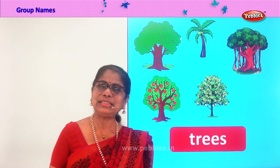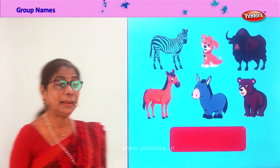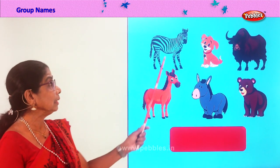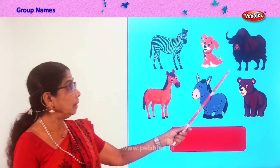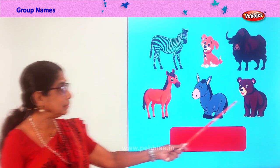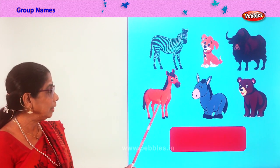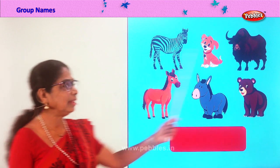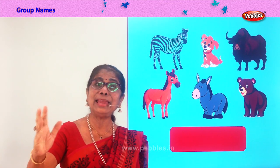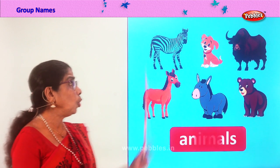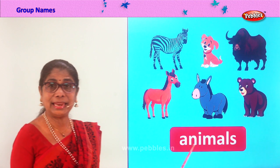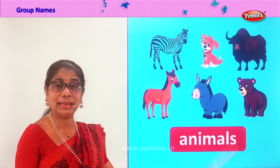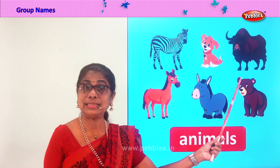Good. Let's look at another item and decide on the group name. Zebra, dog, teddy, donkey, horse — what are they all together? Give me a name. Animals! Very good, all are animals. Spell animals: A-N-I-M-A-L-S. The group name for this is animals.